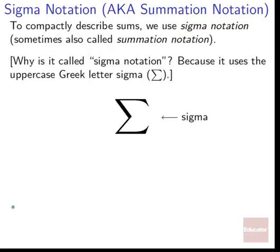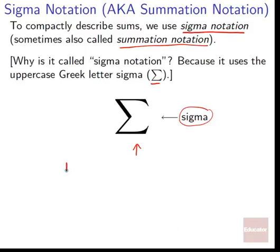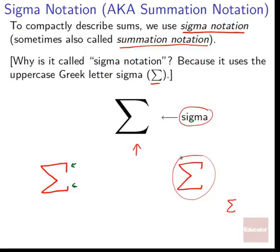Enter sigma notation. To compactly describe sums, we use something called sigma notation, also sometimes called summation notation. It uses the uppercase Greek letter sigma. If you're drawing it by hand, I would recommend writing it with little vertical hooks on either end — kind of a capital M on its side. If you're doing a lot of problems, don't worry if it doesn't come out perfectly each time.